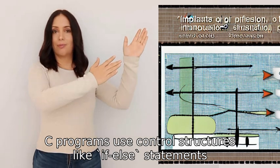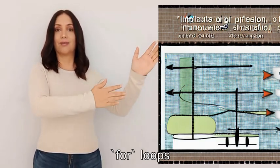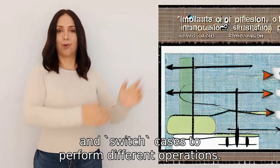C programs use control structures like if-else statements, for loops, while loops, and switch cases to perform different operations.